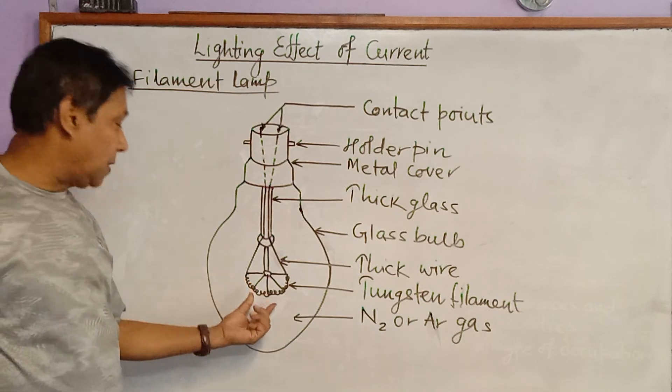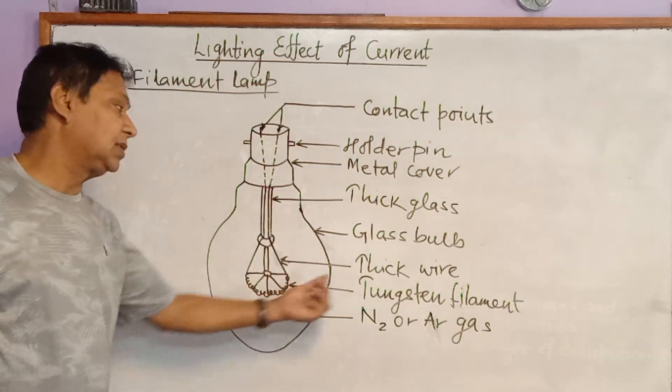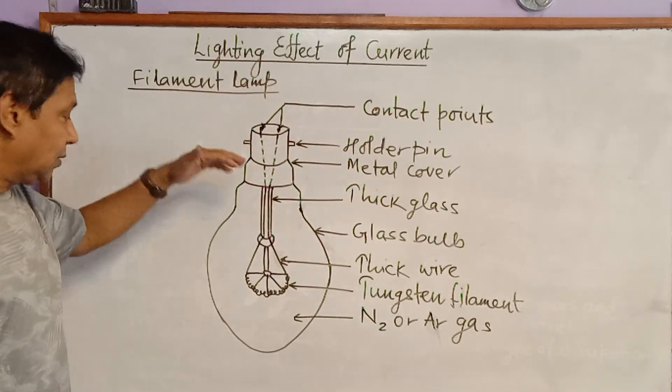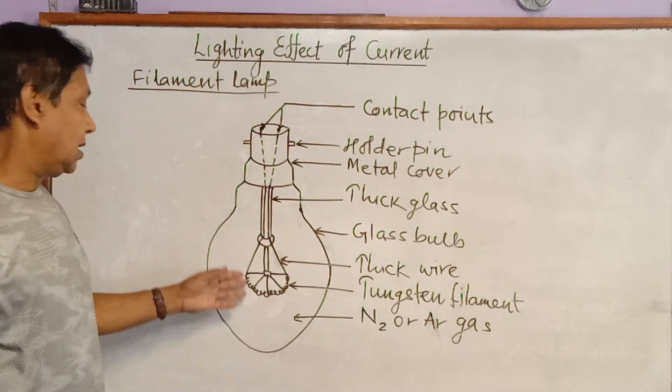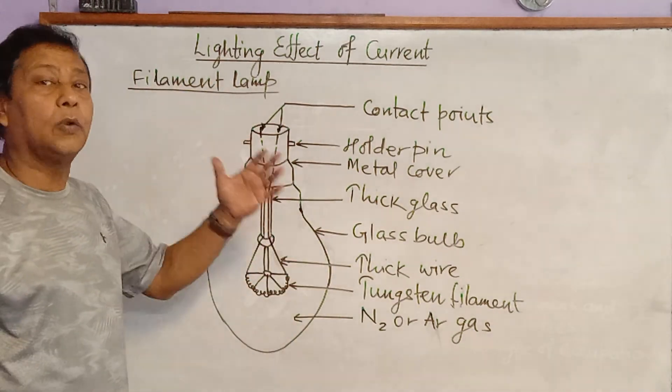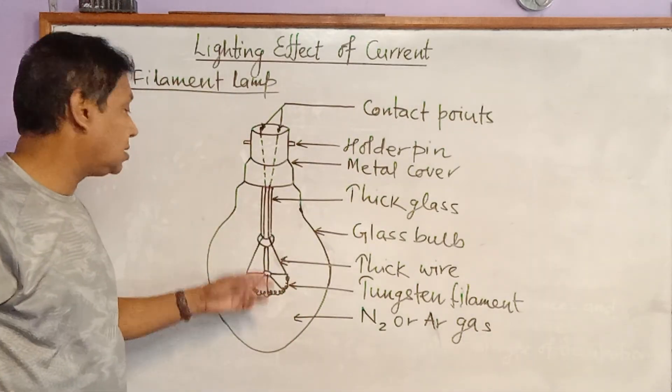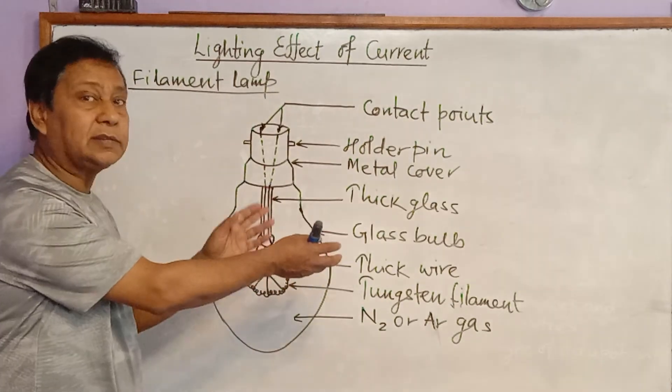This lamp is called filament lamp because the major element which converts electrical energy into light energy is tungsten filament. Whenever current flows through it, this tungsten filament has very high resistance, that's why it opposes or obstructs the flow of current a lot. Because of huge obstruction, this tungsten filament becomes white hot, and when it becomes white hot then it emits light.